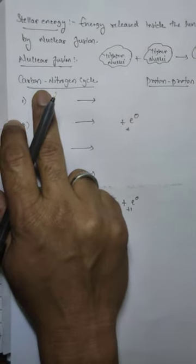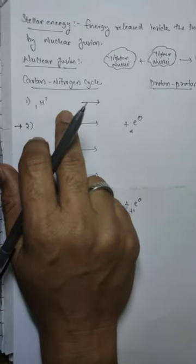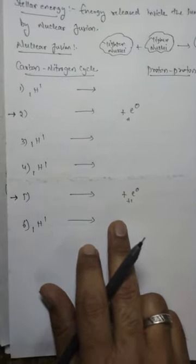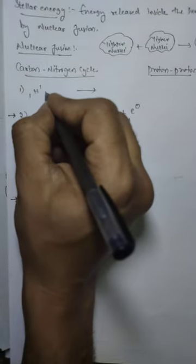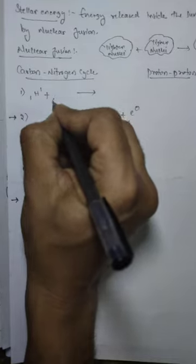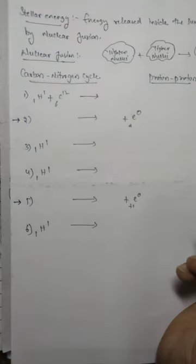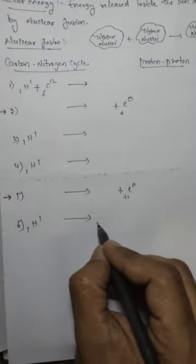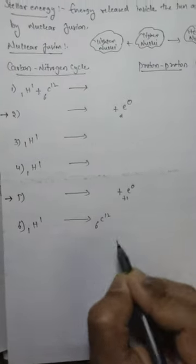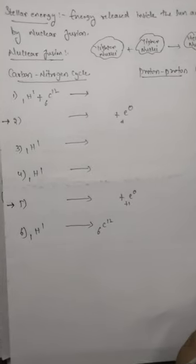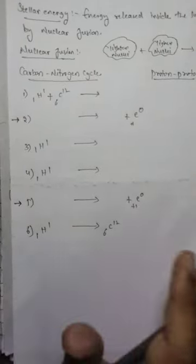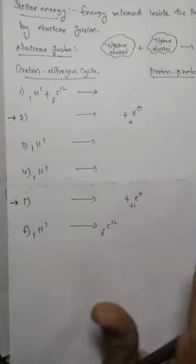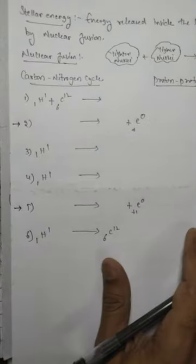Since it is a carbon-nitrogen cycle, it starts with a carbon atom and ends with a carbon atom. So I am writing here 6C12 as the starting carbon atom, and it ends with 6C12 as well. Now we have to equate and balance the left-hand side and right-hand side chemical equations.